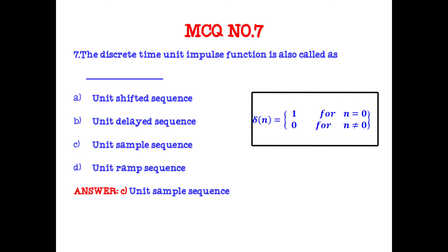The unit sample sequence in discrete time can be shifted either as an advanced signal or a delayed signal. An advanced signal is denoted as δ(n + k), and a delayed signal is denoted as δ(n − k), where k may be any variable.